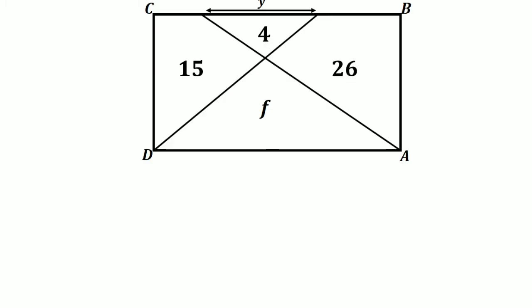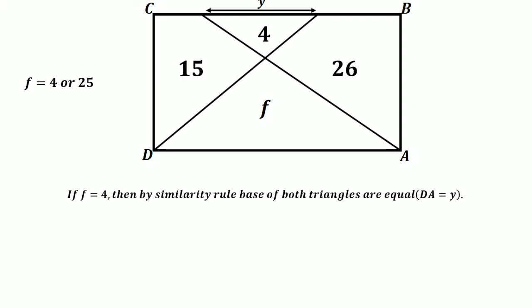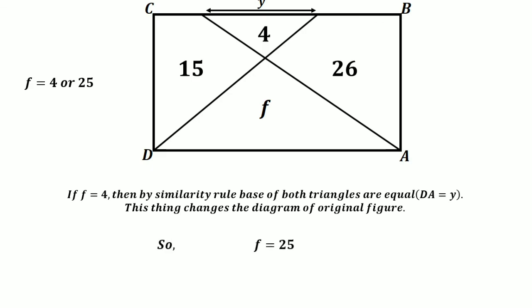Looking at our original figure, f may be 4 or 25. If f equals 4, then by the similarity rule the bases of both triangles would be equal, meaning g would equal y. But this changes the diagram of the original figure. So to keep the diagram as given, f is exactly equal to 25, and that is our correct answer.